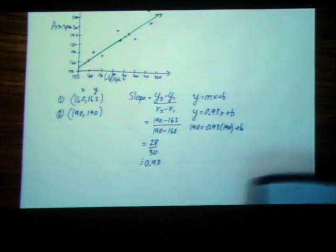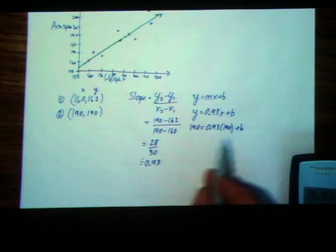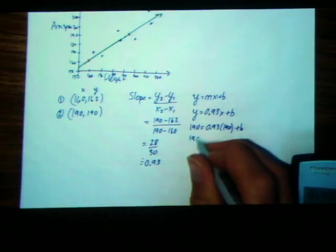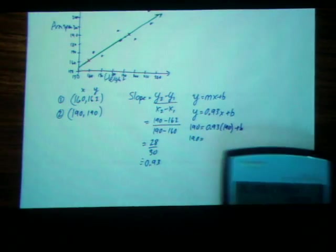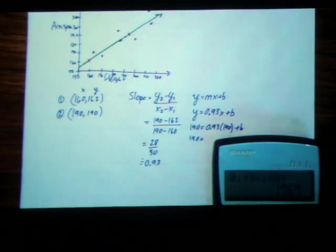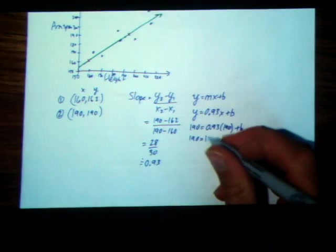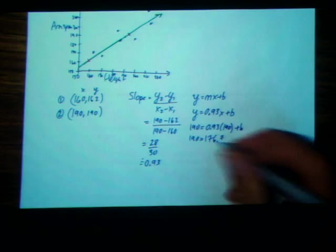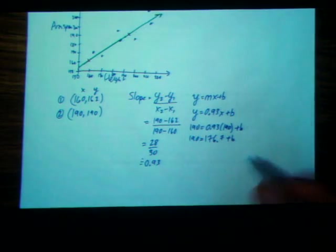Now I'll use my calculator again and do 0.93 times 190. I'm trying to simplify that right-hand side. 0.93 times 190 gives me approximately 176.7.